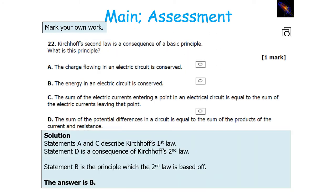Kirchhoff's second law is a consequence of energy being conserved in the circuit, or energy per charge being conserved. A and C describe Kirchhoff's first law. Statement B is what the principle is based on, while statement D is the consequence. Because energy is conserved in the circuit, the sum of the PD in a circuit is equal to the sum of the products of the current and resistance.